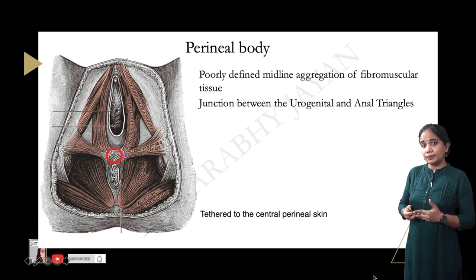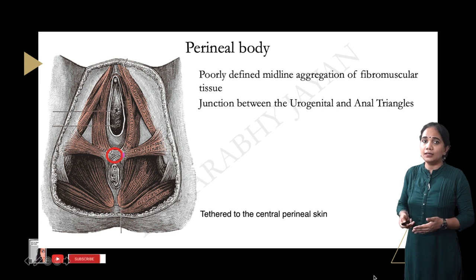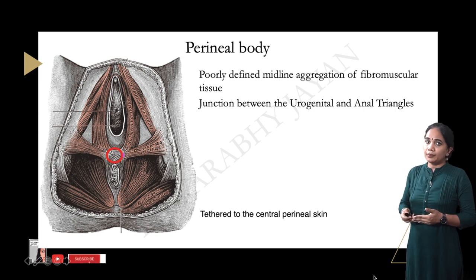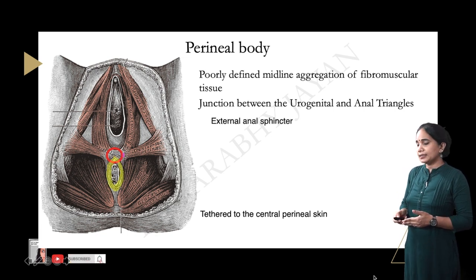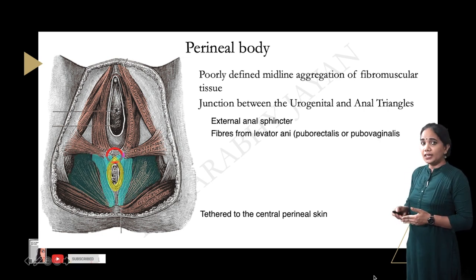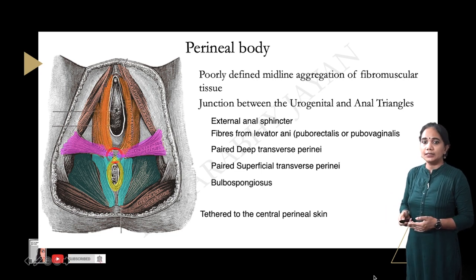Several muscle fibers interlace to form and strengthen the perineal body. It is clinically significant in females because it is frequently damaged during vaginal deliveries, which is why an episiotomy is performed. The muscles contributing to the perineal body include the external anal sphincter, fibers from the levator ani, paired deep and superficial transverse perineal muscles, and the bulbospongiosus muscle.